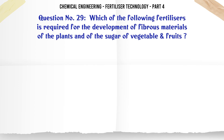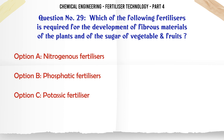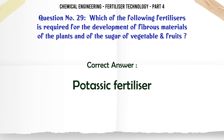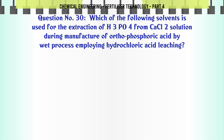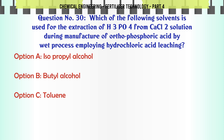Which of the following fertilizers is required for the development of fibrous materials of the plants and of the sugar of vegetable fruits? a. nitrogenous fertilizers, b. phosphatic fertilizers, c. potassic fertilizer, d. none of these. The correct answer is: potassic fertilizer.